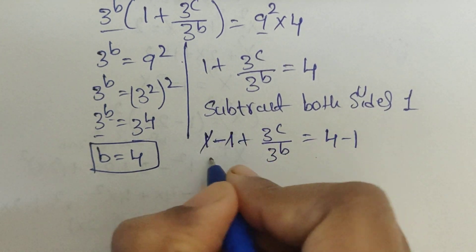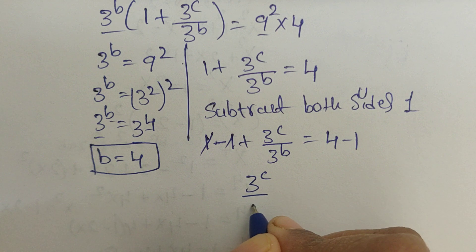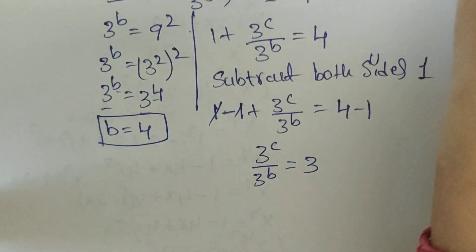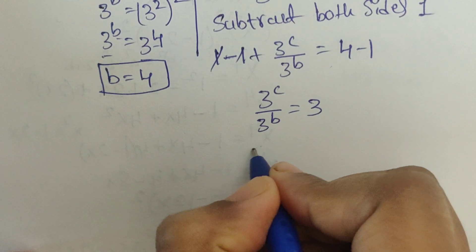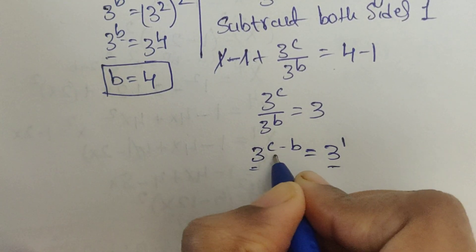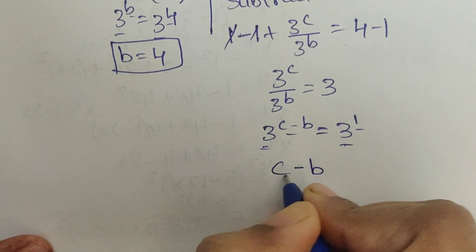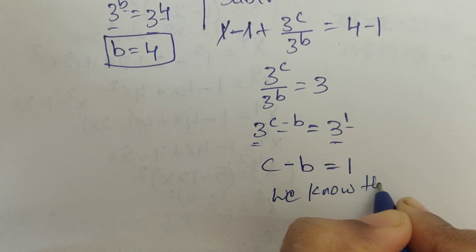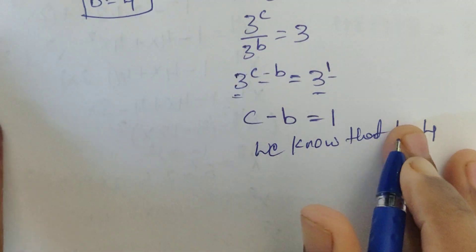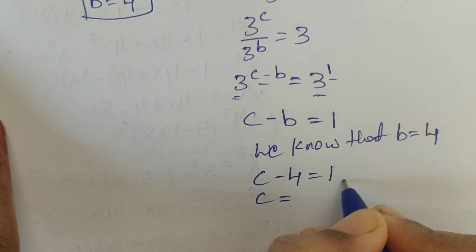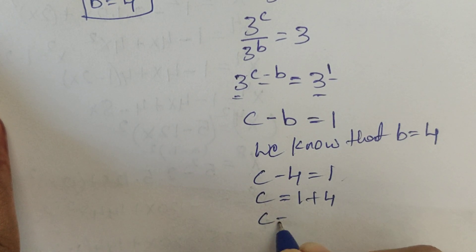So here 1 minus 1 is equal to 0. So now it will be 3 power c divided by 3 power b equal to 4 minus 1 which is equal to 3. Use this formula — here we can write 3 power c minus b equal to 3 power 1. Now compare these two terms: same base, different exponents, so c minus b equal to 1. We know that b equal to 4, so substitute: c minus 4 equal to 1, move this term to the right side, c equal to 1 plus 4 which is equal to 5.